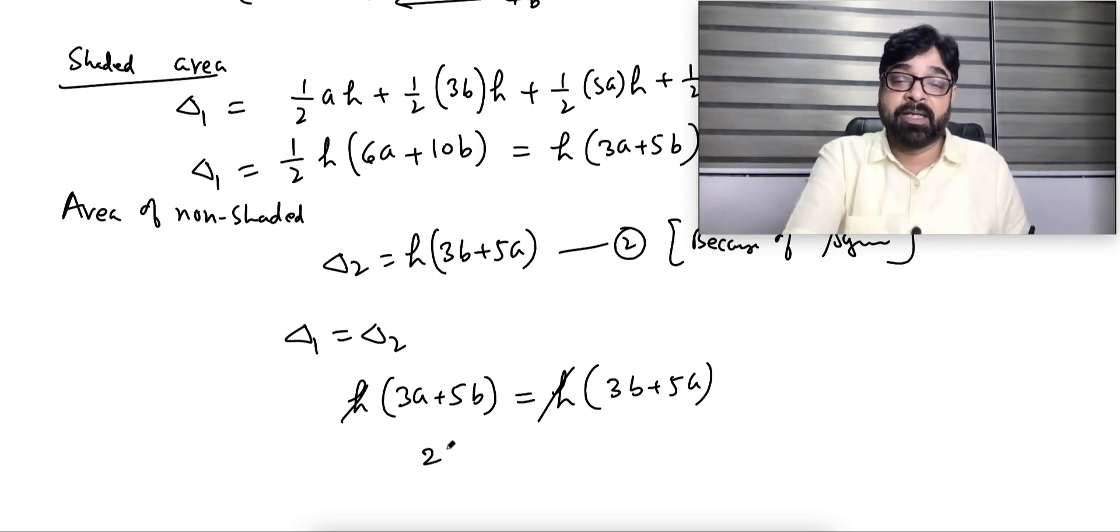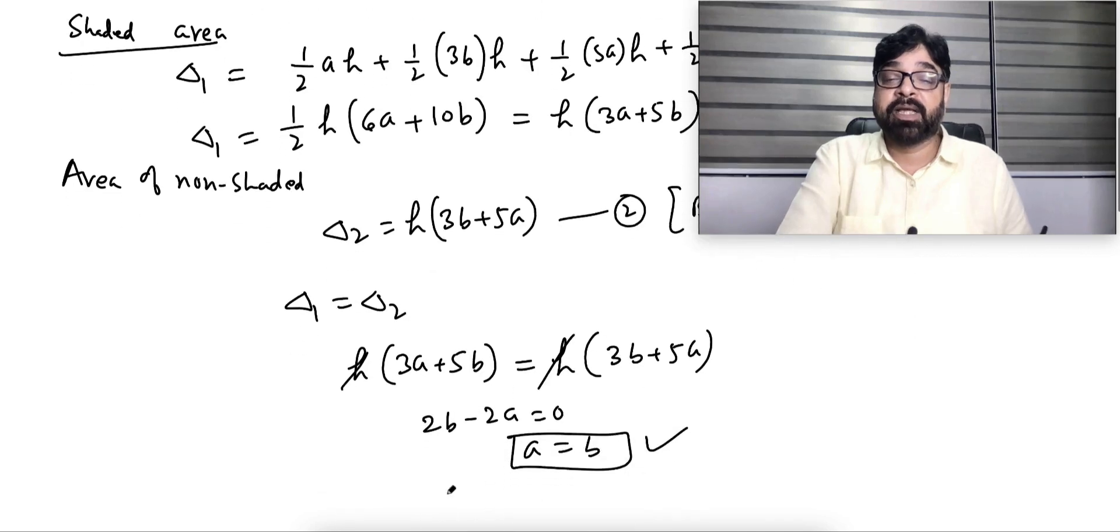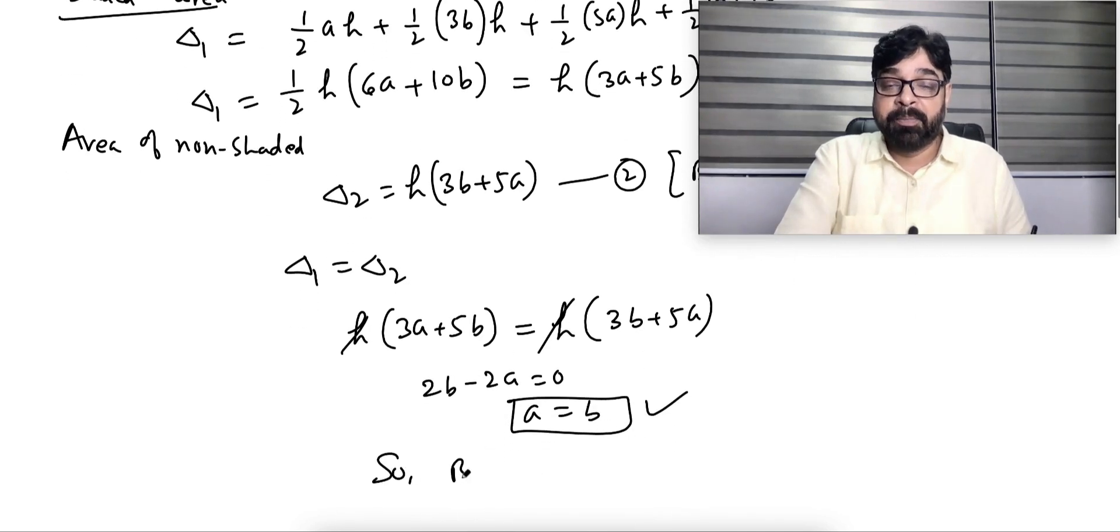Minus 2a equal to 0, that means a equal to b. a equal to b means these two lengths are equal, so we can say BD equal to DC. Hence proved.